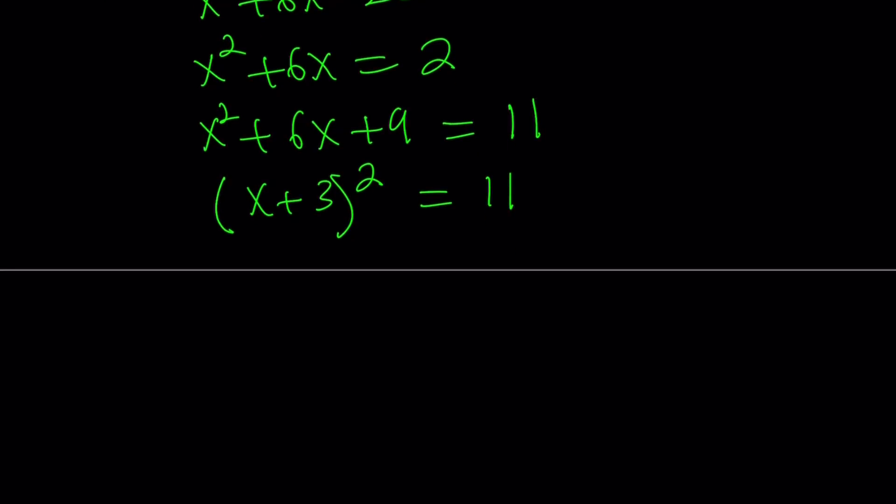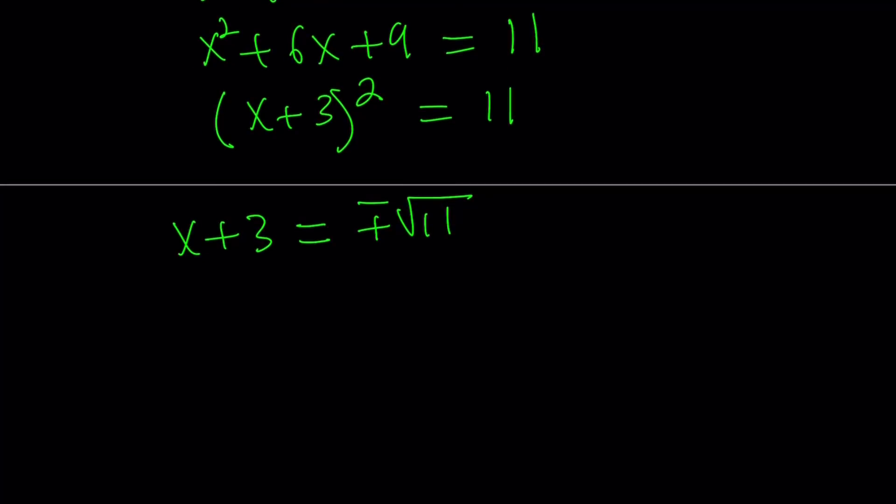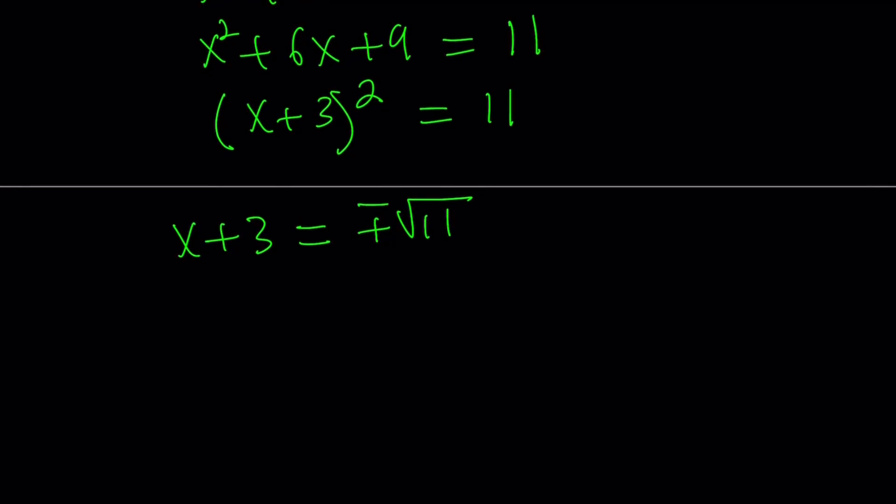Anyway, so the left-hand side becomes x plus 3 quantity squared equals 11. And from here, by taking square root, we can easily solve this quadratic equation. This is a method of solving quadratic equations. So from here, we get x plus 3 equals plus minus square root of 11. And by moving the 3 to the right-hand side, we're going to get x equals negative 3 plus minus the square root of 11. Awesome. Now we've got two roots.